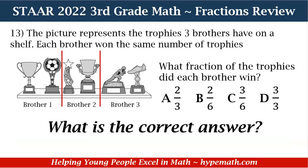So what is the correct answer? We are looking at the three brothers, but we're trying to find the fraction of how many trophies each brother won. To find our denominator, we count all of the trophies together: one, two, three, four, five, six — so 6 is our denominator. For our numerator, we look at how many trophies each brother won. Each brother has two trophies, so our numerator is 2 and our denominator is 6.